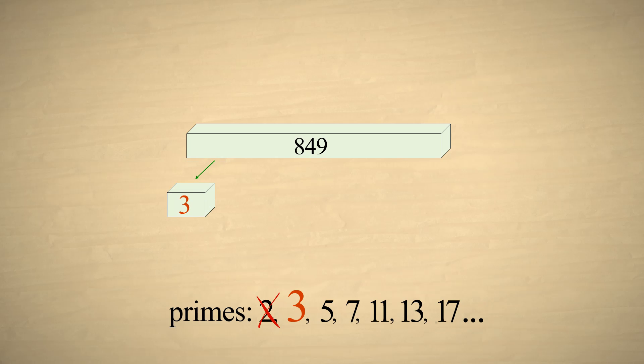849 divided by 3 is 283, so 283 is also a factor. But is it prime or composite? If it is prime, then we can stop. We have found all the prime factors. Its digits add up to 13, which is not divisible by 3. So we go on to the next prime number, 5. Since 283 does not end in 5 or 0, 5 is not a factor. So we test the next prime number, 7.